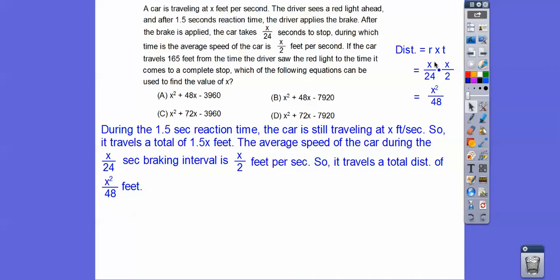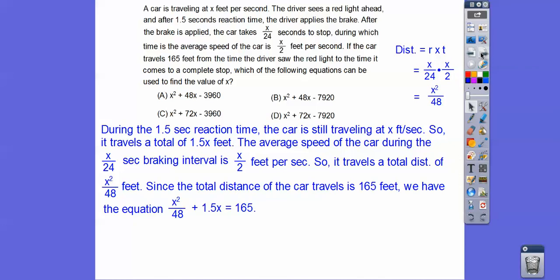Distance equals rate times time. So the average speed of the car during the next interval, it takes x over 24 seconds to stop. So the average speed is x over 24 seconds braking, and the interval is x over 2 seconds per feet. So remember, distance equals rate times time. The rate is x over 24. The time is x over 2 feet. So when we multiply those, we get x squared over 48 right there. And since the total distance the car traveled is 165 feet, we have this equation, this distance plus this distance, and we can do this distance plus this distance, but typically your x squared is first right there. Equals that. And then we're going to multiply by 48, because we want to get it in one of these equations right there. So when we multiply by 48, so this times 48 is x squared. This times 48 is 72. And then this times 48, and we subtract it, and we get choice, choice D finally.